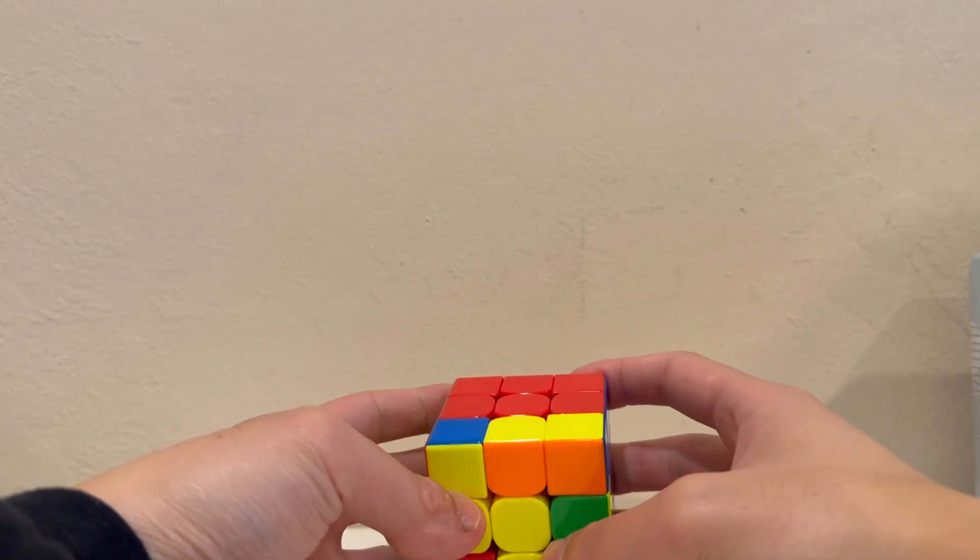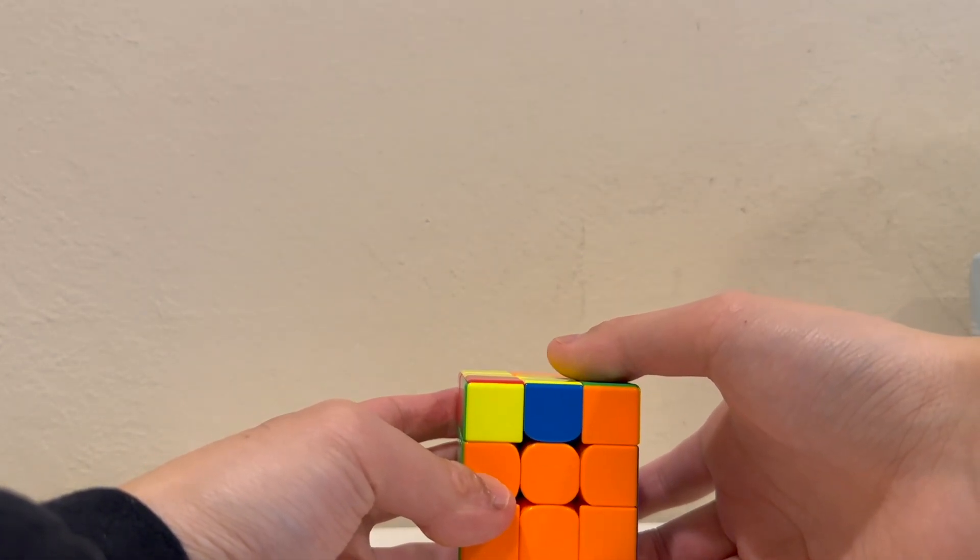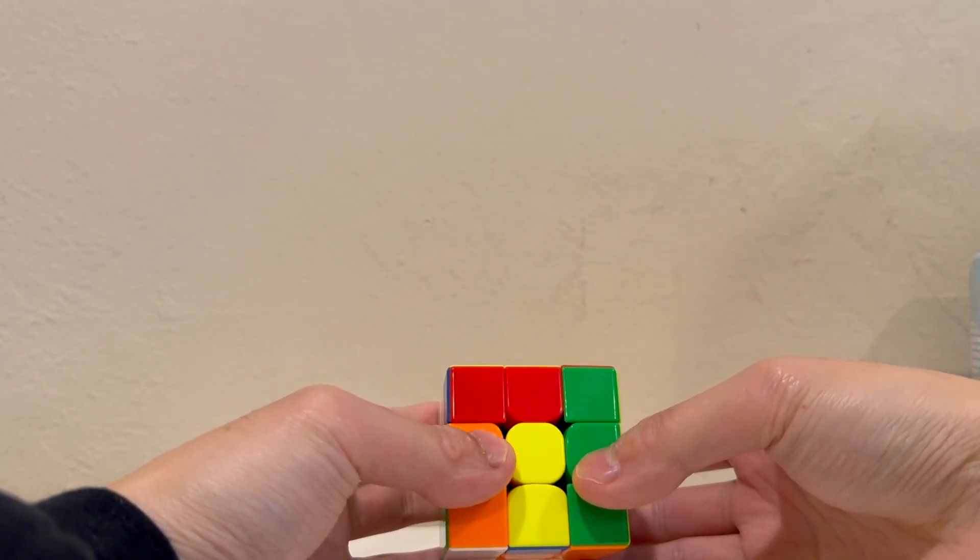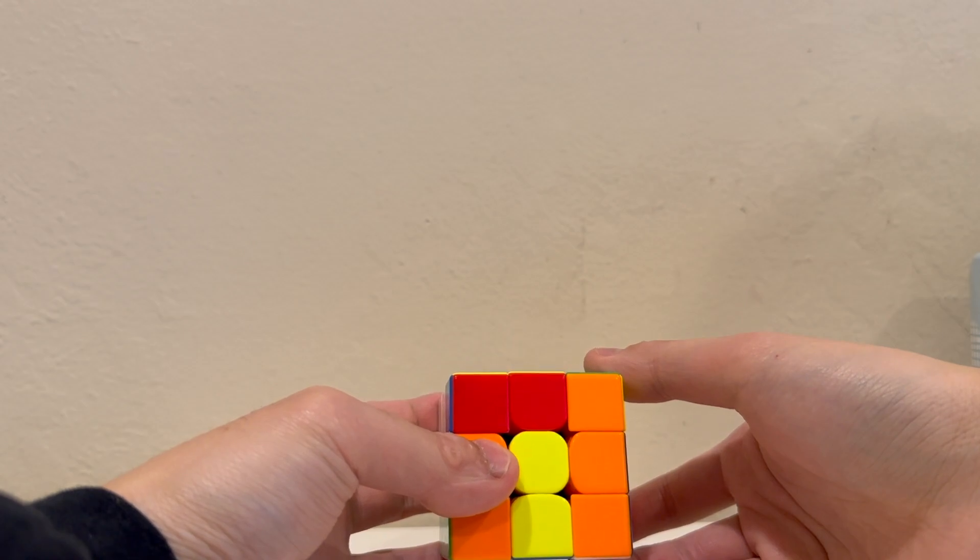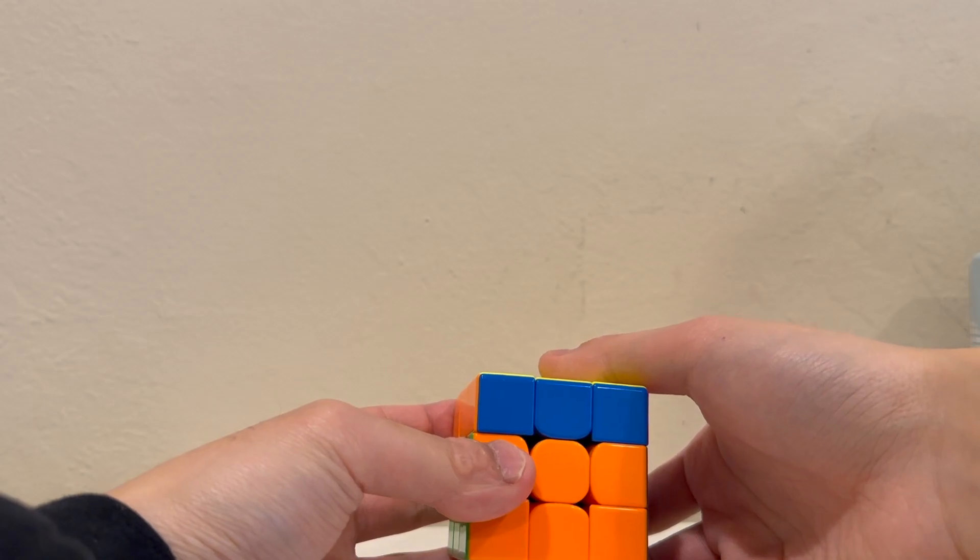And then for OLL he had this really simple case which he just did like this: wide r prime u prime r u prime r u2 wide r.